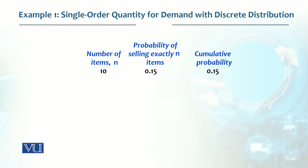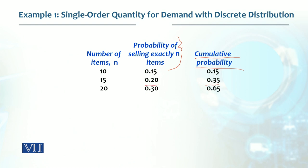If the demand is 10 items, the probability is 0.15, that is 15 percent. The extreme right column is basically the cumulative probability — these are the probabilities that we have summed. So for exactly 15 items, it is 20 percent probability. Cumulative probability becomes 20 plus 15 equals 35 percent.